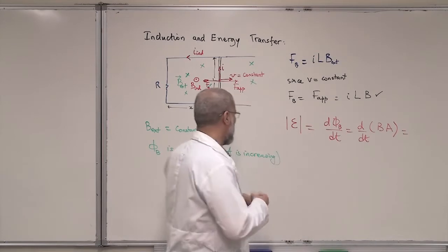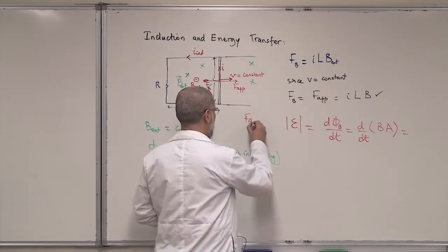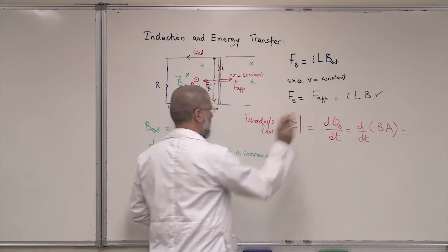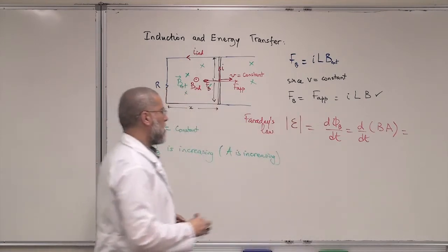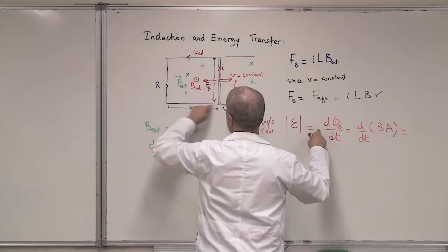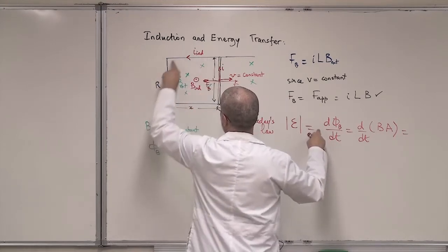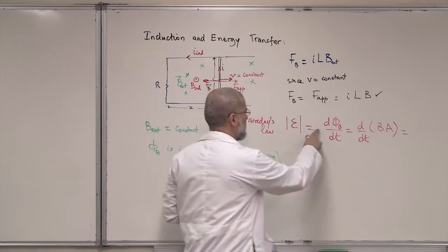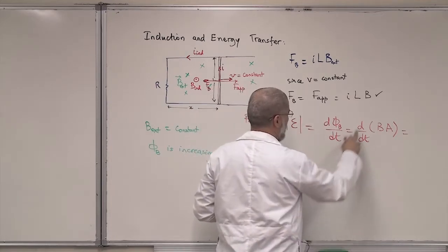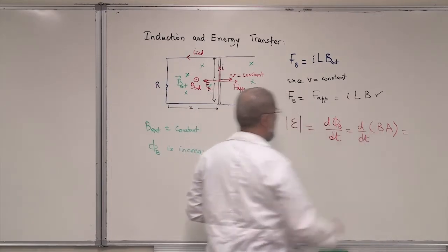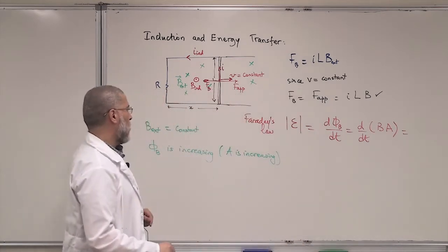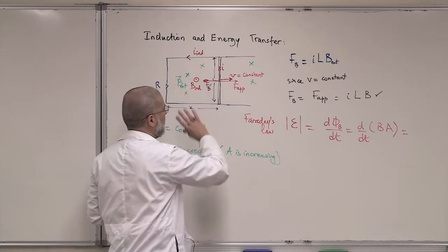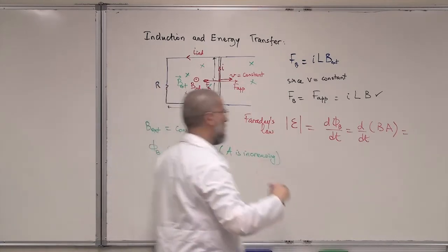Faraday's law gives you the magnitude of the EMF as d(phi)/dt. Here we have only one coil — one turn — so there's no N factor. There's no minus sign because I'm talking about magnitude. And d(phi)/dt equals B·dA/dt. The cosine of the angle is either zero or 180, so for magnitude it equals one.